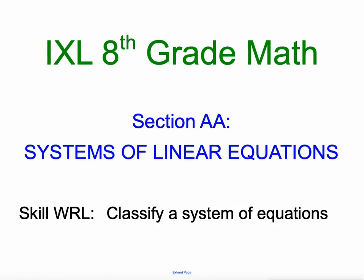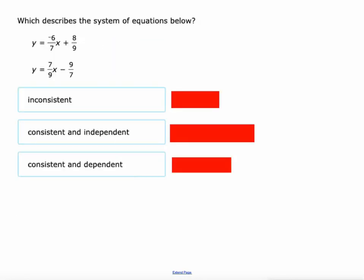Today we're going to classify a system of equations. In my last video, we classified systems of equations by graphing. Today we're going to try and do it without graphing. We're going to describe or classify the system of equations as either inconsistent, consistent and independent, or consistent and dependent.